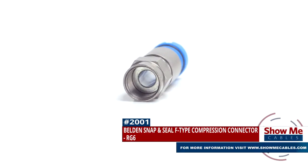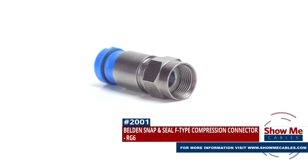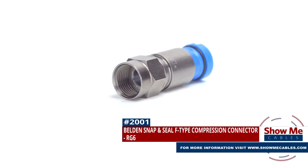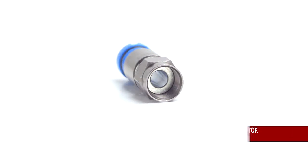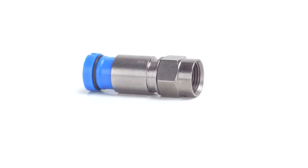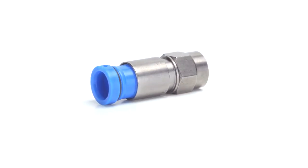Are you looking for a quick and easy DIY installation or repair for your coax cable? Our Belden Snap and Seal F-Type Compression Connector for RG6 will provide a simple solution for your wiring needs.